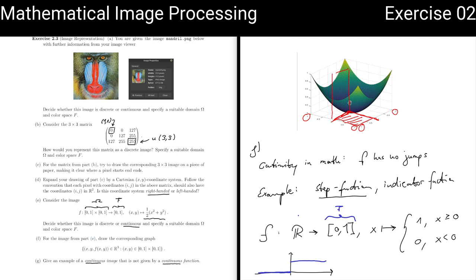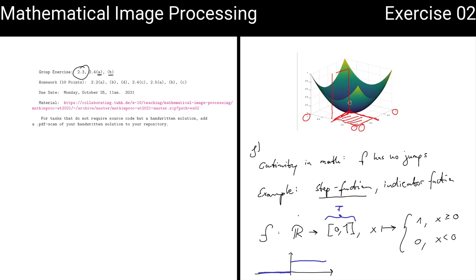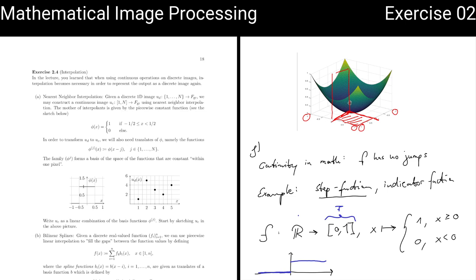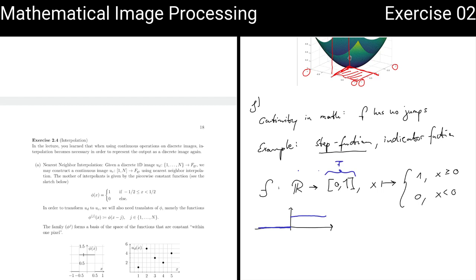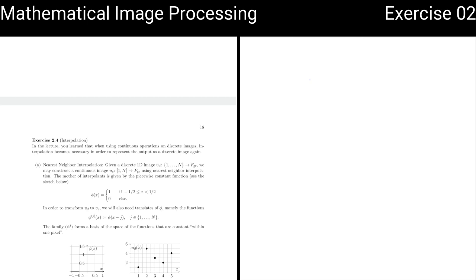We have two more exercises about interpolation — exercises 2.4a and b — which we will look at in the last 10 minutes. Interpolation is the bridge: we have continuous functions, continuous images, and discrete images, and now we want to translate between these worlds.